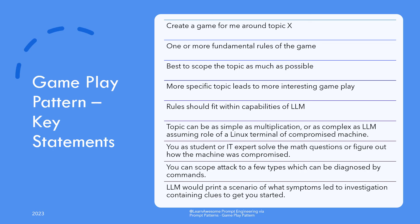The key contextual statements for this pattern are: create a game for me around X, and one or more fundamental rules of the game. The first statement instructs the model to create a game and provides the scoping of the game to a topic area — let's say X. As a general rule, the more specific the topic, the more interesting the gameplay. Next, the user can specify certain rules for the game. The only important bit is that the rules should fit within the capabilities of the model.